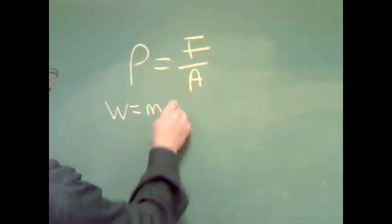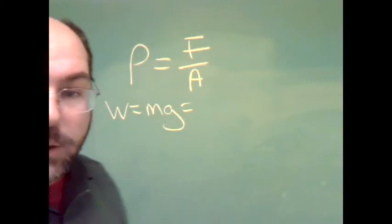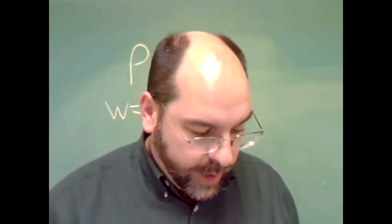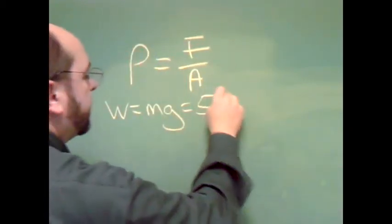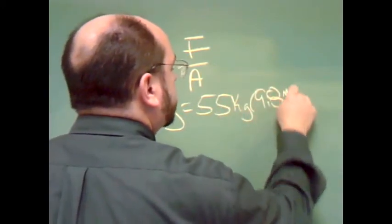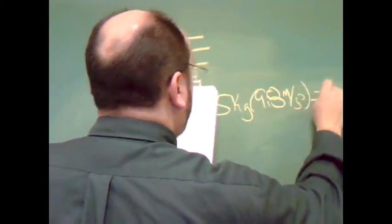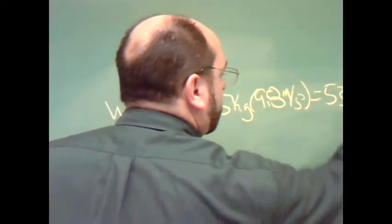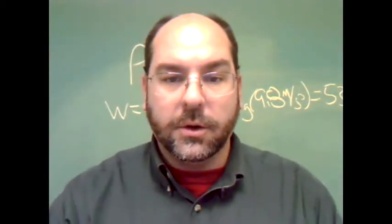So force is the weight of the woman. Weight equals mg. The problem in the book told us that her weight was 55 kilograms times 9.8 meters per second squared, which gives us a weight of 539 newtons. So that's her weight.